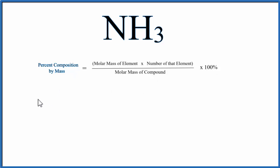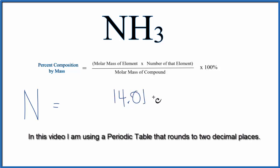So let's start with the nitrogen. For nitrogen, on the periodic table the molar mass is 14.01 grams per mole and then we only have one nitrogen so we don't need to do anything with the number of the element.